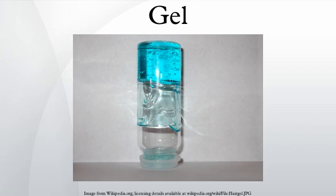Many gels display thixotropy — they become fluid when agitated, but re-solidify when resting. In general, gels are apparently solid, jelly-like materials. By replacing the liquid with gas it is possible to prepare aerogels, materials with exceptional properties including very low density, high specific surface areas, and excellent thermal insulation properties.